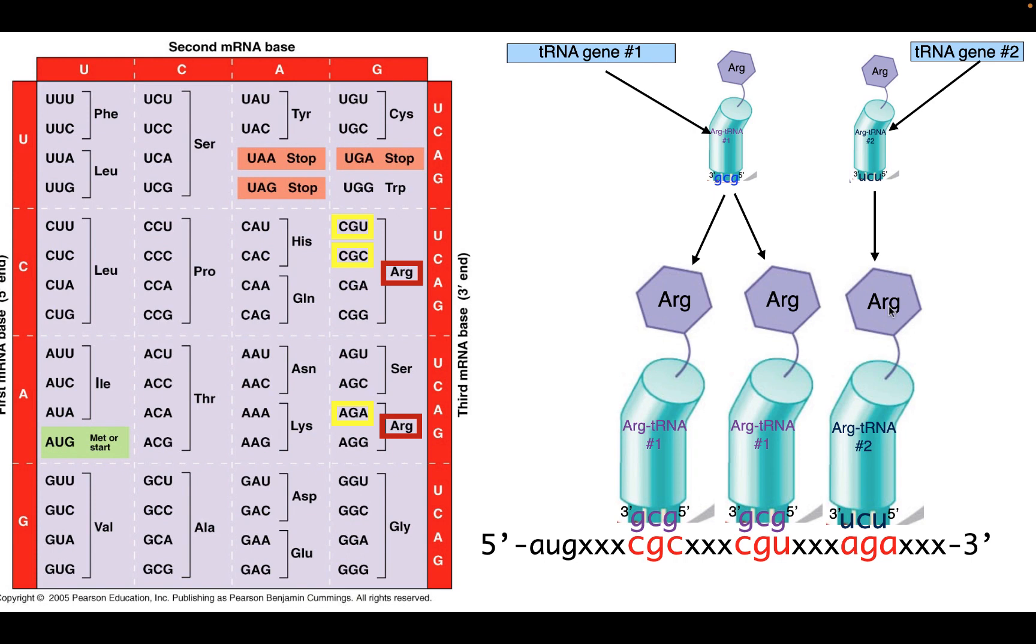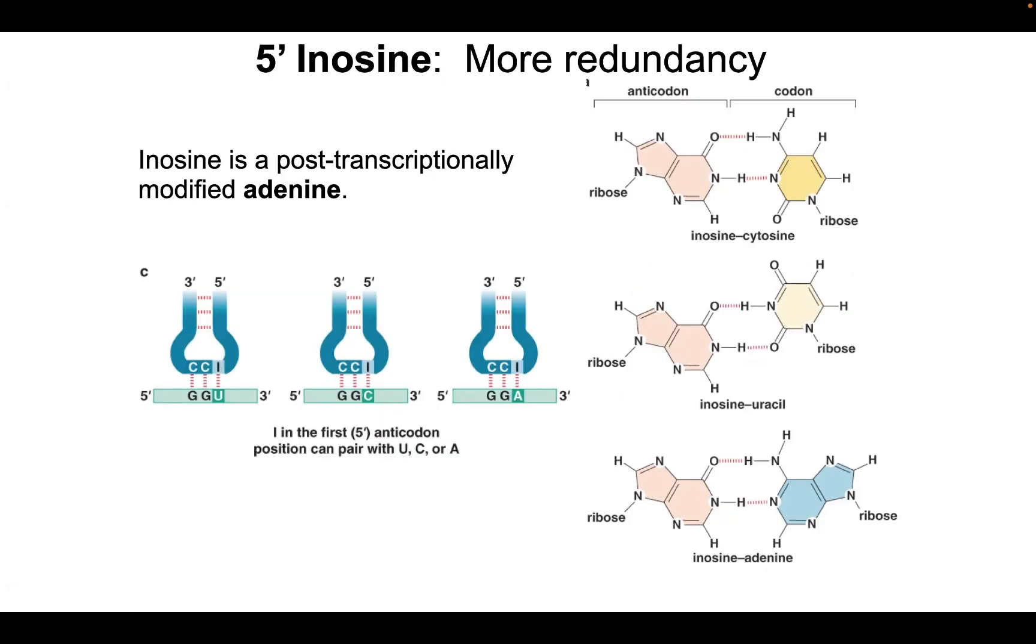Furthermore, to make things just a little bit more complicated, there are some transfer RNAs where that five prime most position in the anticodon, if it's an adenine, is post-transcriptionally modified, meaning that tRNA is transcribed. And then there's an enzyme that converts that adenine into an inosine. And now inosine is interesting. It looks like this, and it can tolerate three different base pairings, to cytosine, to uracil, and to adenine.